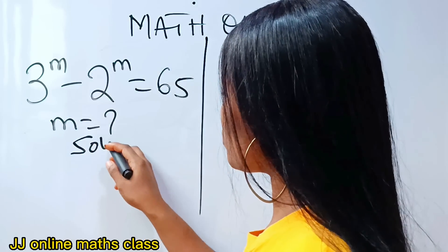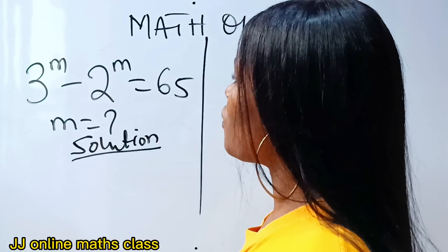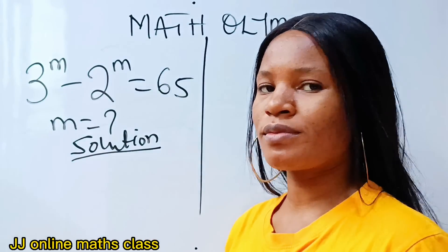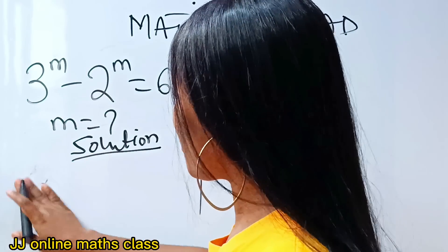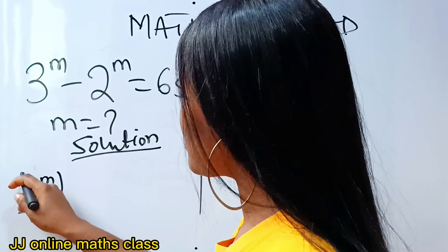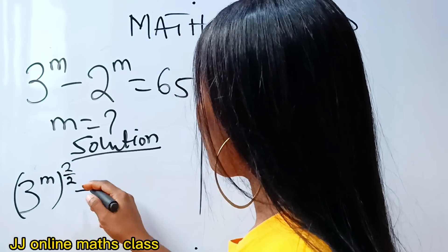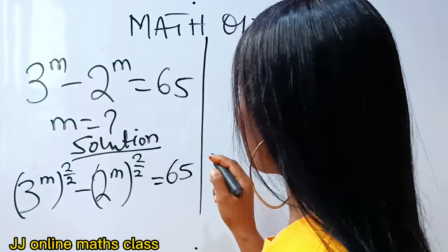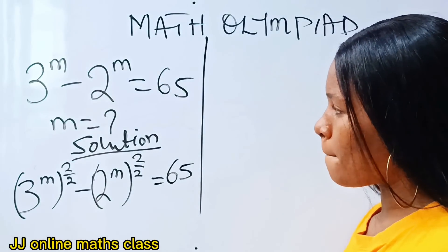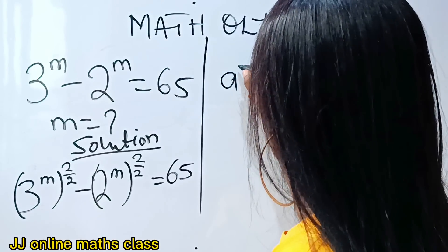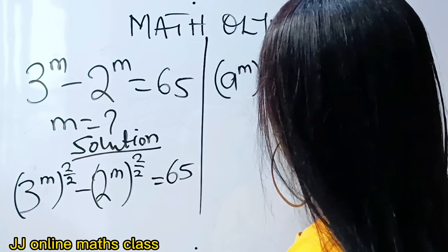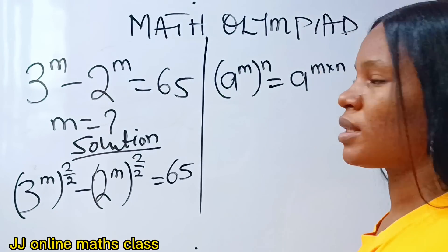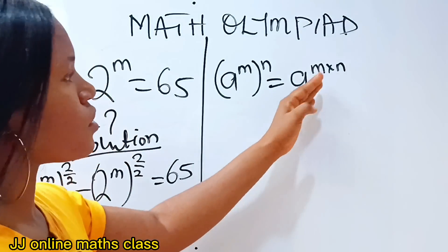Alright, this is the first thing we need to do — the solution. The first thing we need to do is raise each of these to the power of 2 over 2. I know it will sound somehow, but we are going to see why we are doing that. We all know that a to the power of m raised to the power of n, using the law of indices, is the same thing as a to the power of m times n.